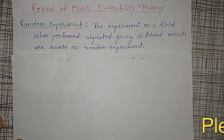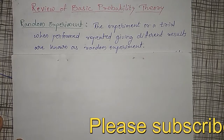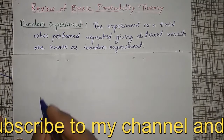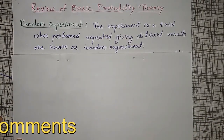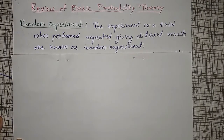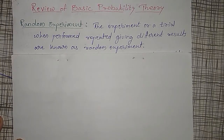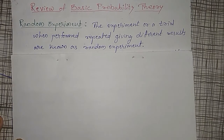A very simple and common example is whenever you toss a single coin, every time we are getting an outcome we are not expecting — whether it is a head or a tail. Or whenever you roll a die, six outcomes you may get but we are not expecting that. Similarly, drawing a card from a deck — all these are examples of a random experiment.